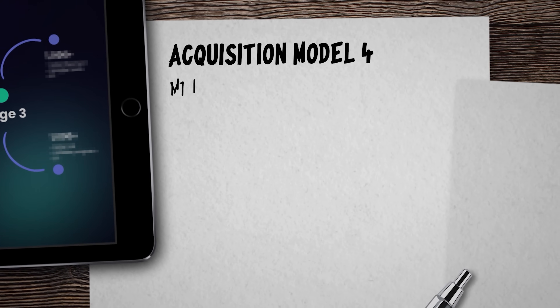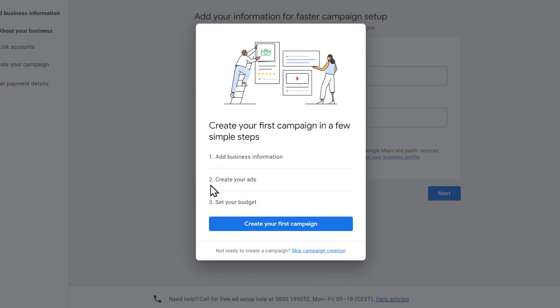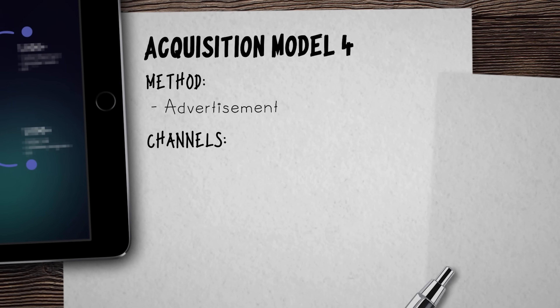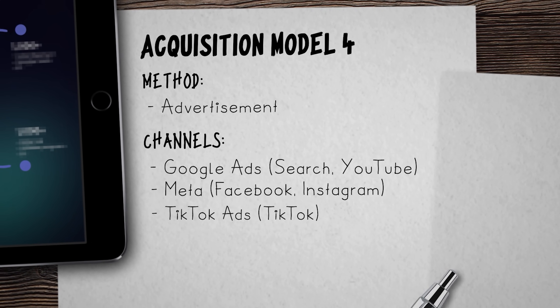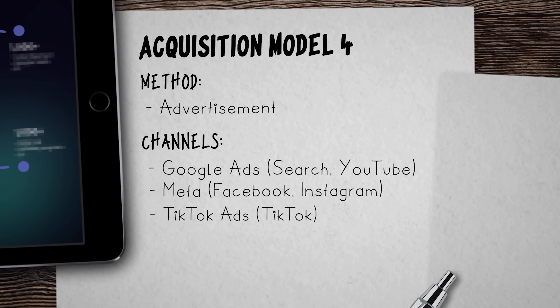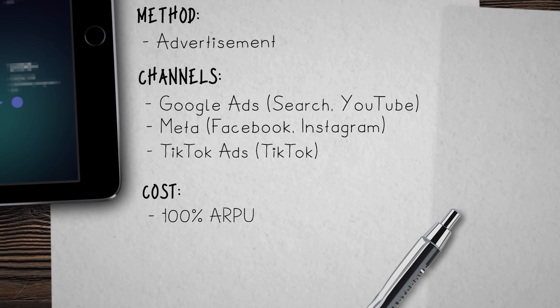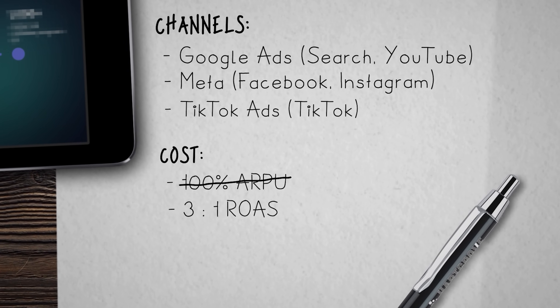In the first model, we're going to use the advertisement method. We'll take content that has proven to work well during stage two and turn it into paid ads we can scale to reach a whole new level of awareness. This also includes crafting, testing, and scaling new ad creatives and trying out new strategies. For channels, I recommend Google Ads for search and video ads on YouTube, Meta for image and video ads on Facebook and Instagram, and TikTok for video ads. The cost depends on your average revenue per user and your desired return on ad spend. If you aim for a 3-to-1 return, for every $1 spent acquiring a new user, that user earns your SaaS $3 — you put $1 back into acquisitions and keep $1 as profit.